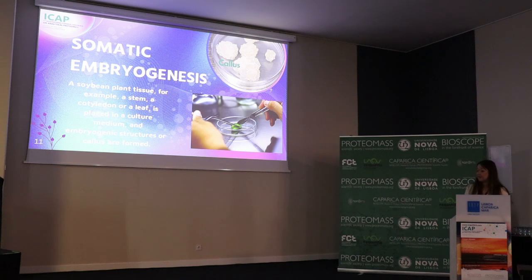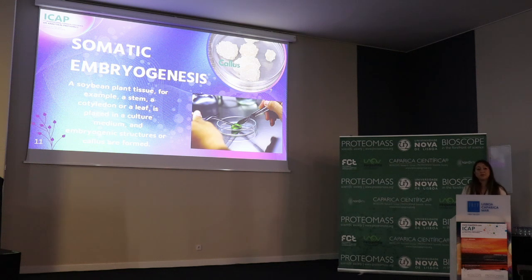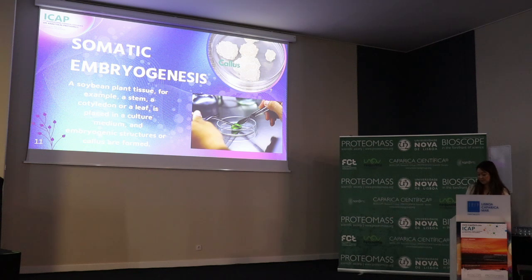In the case of soybean plant tissue, we take a soybean plant tissue — for example a stem, cotyledon, or leaf — and place it in a culture medium containing different nutrients and hormones. Embryogenic structures, or callus, are formed, which is a cluster of plant cells.